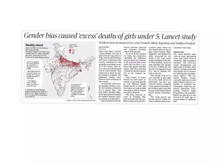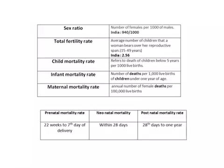Our first article is 'Gender Bias Caused Excess Deaths of Girls Under 5.' In this article, we are going to see various terms like prenatal mortality and sex ratios. The first one is sex ratio — it is used to describe the number of females per thousand males.